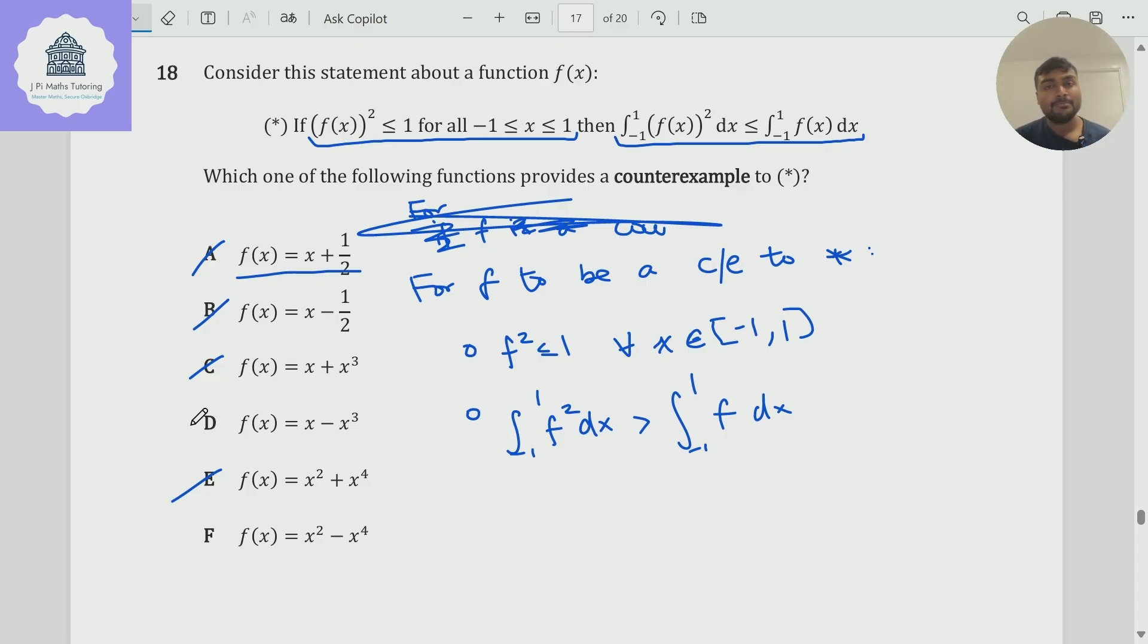We're left with options D and F. So now at this stage, this is a good technique that I like to employ when doing multiple choice questions, when I'm trying to do it by elimination: once you've eliminated the majority of the options and you're only left with two or three options, you want to compare and test.